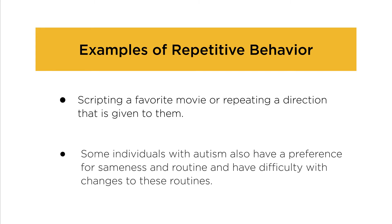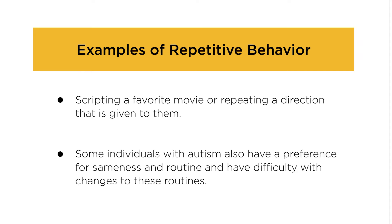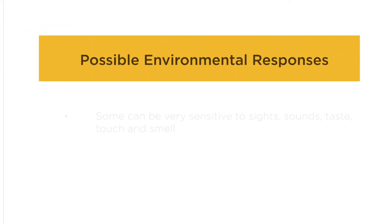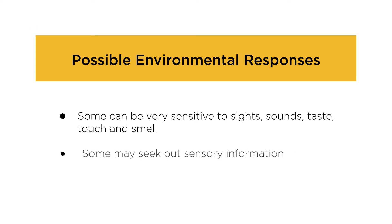Some individuals with autism also have a preference for sameness and routine, and have difficulty with changes to these routines. Finally, many people with autism have differences in their response to the environment around them. Some individuals with autism can be very sensitive to certain sights, sounds, taste, touch, and smell, and experience this sensory information as very unpleasant and uncomfortable. In addition, some individuals with autism can sometimes seek out sensory information in different ways, such as sniffing or closely looking at things in the environment.